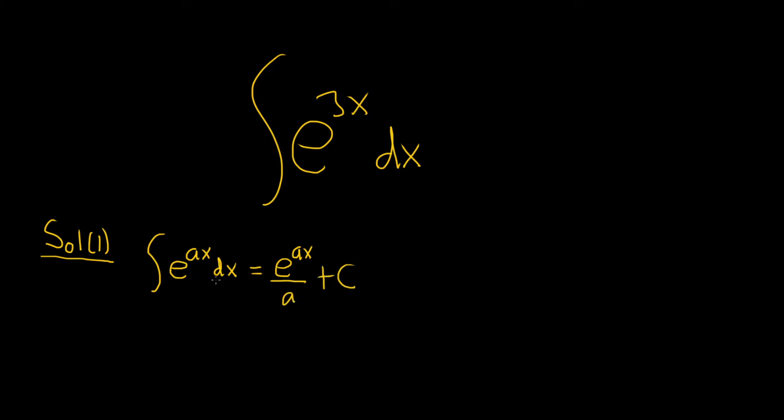So in our example here, a is equal to 3. So we have the integral of e to the 3x dx, and this is equal to e to the 3x, and then you divide by a, which is 3, plus C. So that would be the final answer.